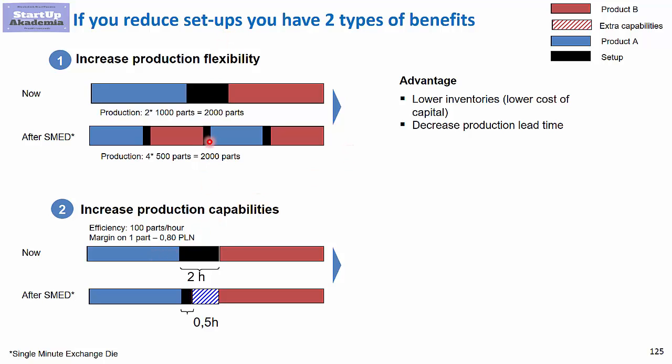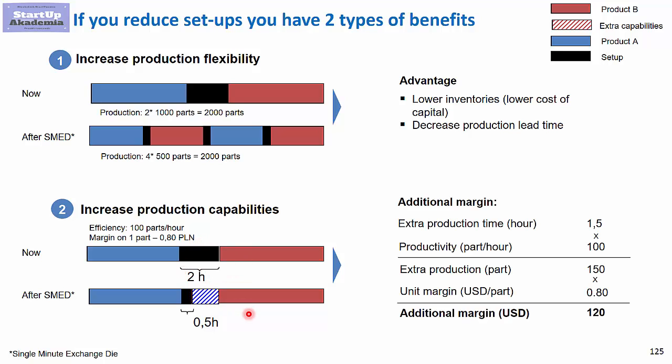The other thing which you can do is not do more setups because they are shorter, but actually use this time to produce new goods. So in this case, I would earn half an hour of production time because I reduced the setup of the machine. And this obviously means some margin being generated thanks to having this half an hour. So there are two things: lower inventory and then higher profits also due to the fact that you can use the setup time to produce new goods that you need.